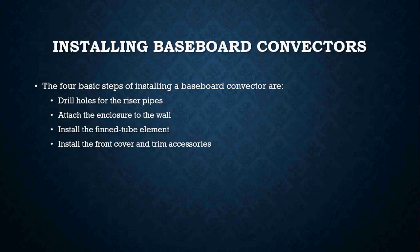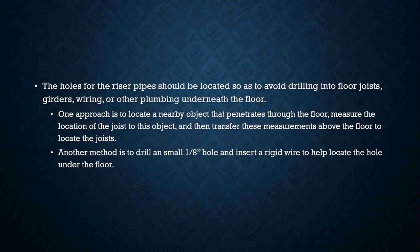When installing baseboard, there are four basic steps: first, drill holes for the riser pipes that go through the floor; then attach the enclosure to the walls; then install the fin-tube elements; and then put the front cover and trims on. The holes for the riser pipe should be located to avoid drilling into floor joists, girders, wiring, or other plumbing underneath the floor. Before drilling, go downstairs to the basement to make sure you have a clear path and won't be cutting wires or drilling through a water line.